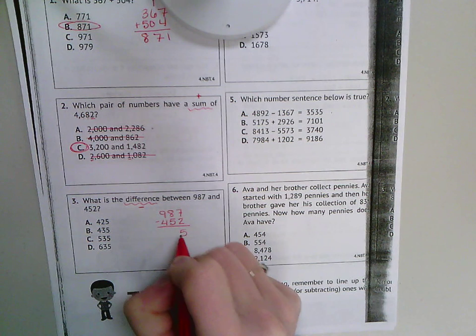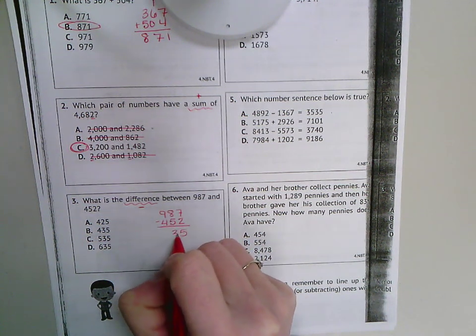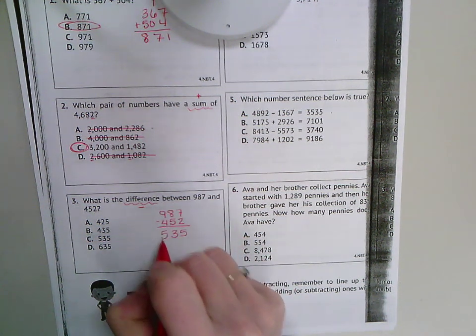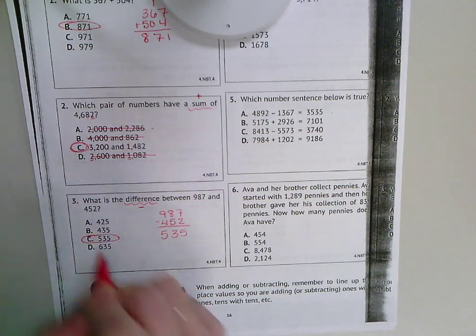7 minus 2 is 5, 8 minus 5 is 3, 9 minus 4 is 5, so C, 535.